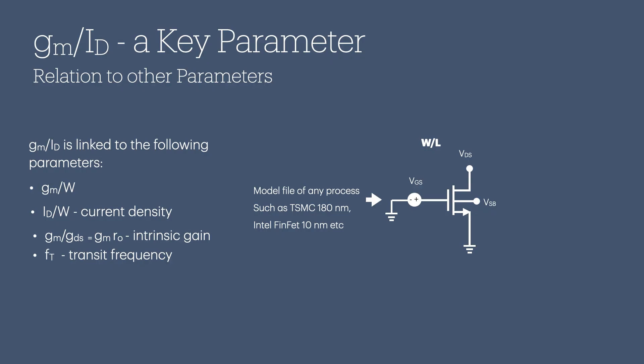A transistor model file of any process node, such as TSMC 180 nm, TSMC 22 nm, Intel FinFET 10 nm process, etc., must be used when characterizing the device. For device characterization, we will measure and list GM values for different channel lengths (L), gate-to-source voltages (VGS), drain-to-source voltages (VDS), and source-to-body voltages (VSB). We will also do the same for R0 (or 1 over GDS), the current density (ID over W), and the gate-to-source capacitance (CGS), which is needed to determine the transit frequency (FT).